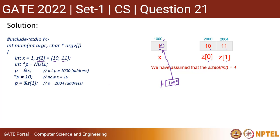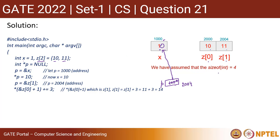Next, we store the address of z[1] into p. z[1] has address 2004 in this case. Then we add &z[0] + 1. Ampersand of z[0] means the first index position is added with 1, so it moves to the next index position — that is basically the address of z[1]. Regardless of the size of integer, it will move to the address of the next element inside the array, which is eventually z[1].